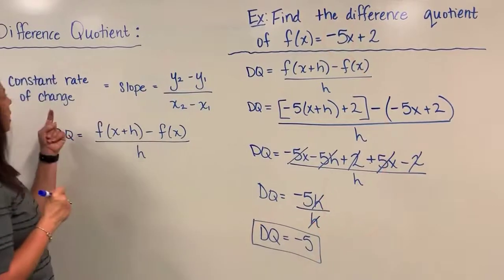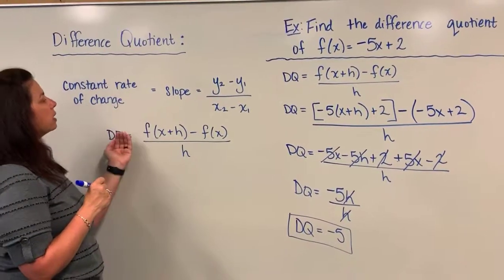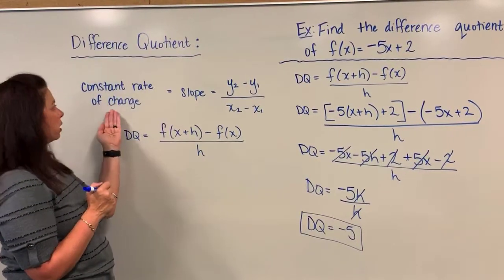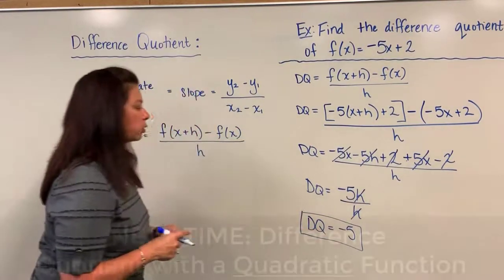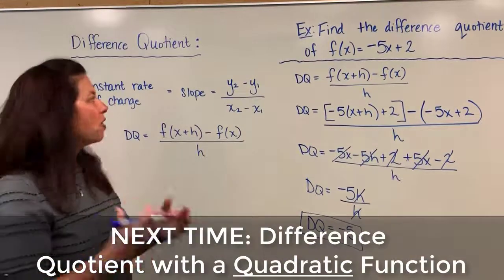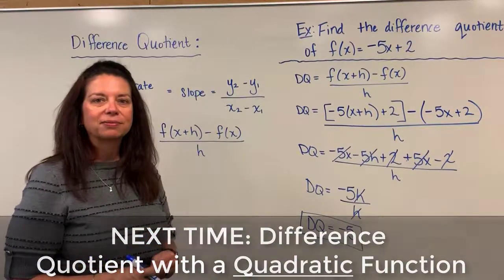If I take you back here, I started with saying that we were going to be connecting this new idea of difference quotient with the concept of constant rate of change and slope. Well, this negative 5 for the difference quotient is in fact the slope of that function that we started with. Thank you.